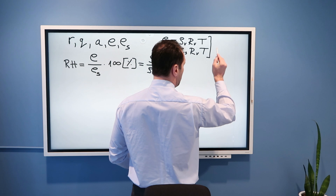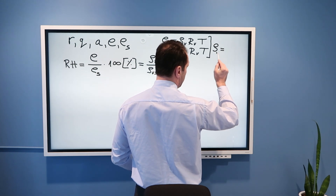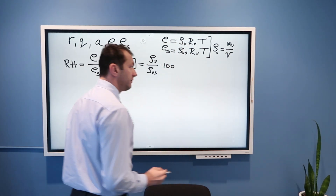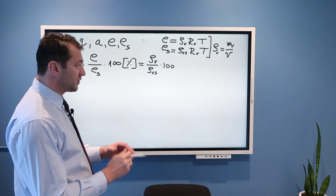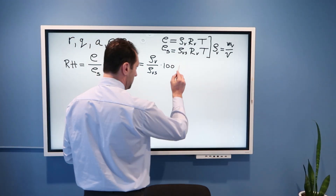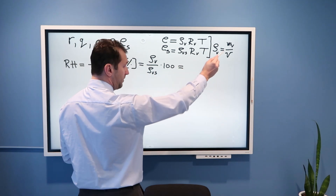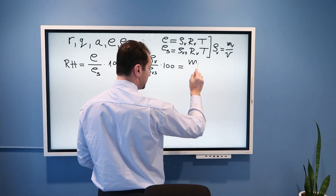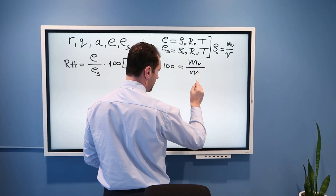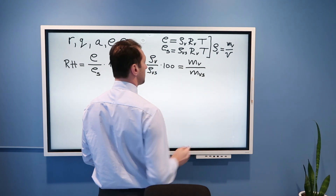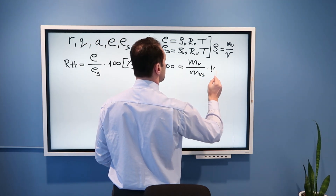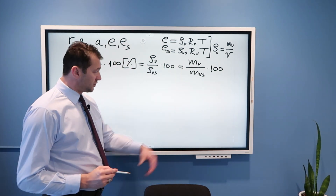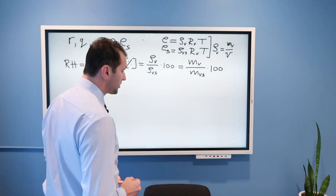Moreover, we also know that density of water vapor is mass of water vapor divided by the volume of the parcel of air in which we are measuring this mass. So, if we plug in this equation, we can define relative humidity as mass of water vapor divided by the mass of saturated water vapor, and again times 100 to get the result in percentages. Yet another way to do this.